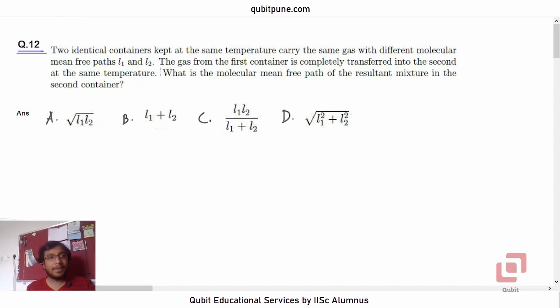Let's read the problem statement. Two identical containers kept at the same temperature carry the same gas with different molecular mean-free paths L1 and L2.